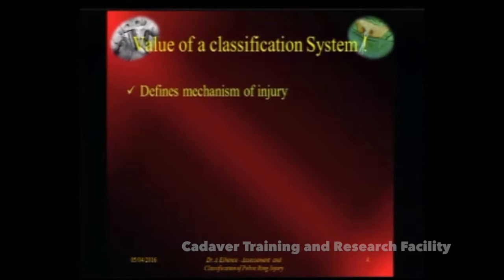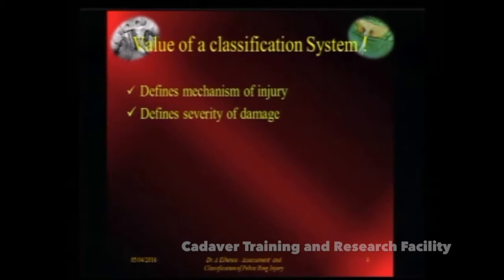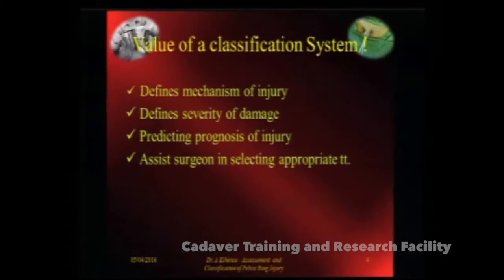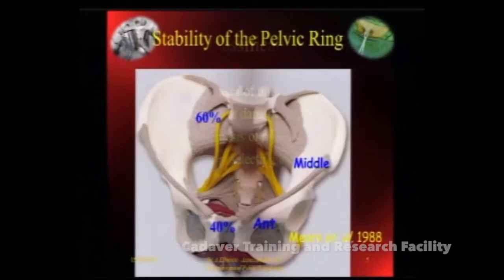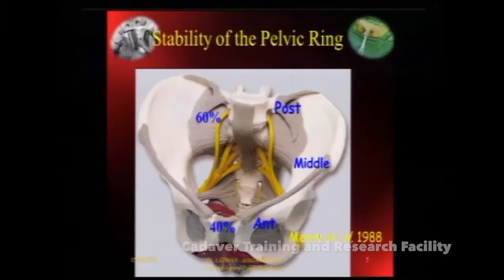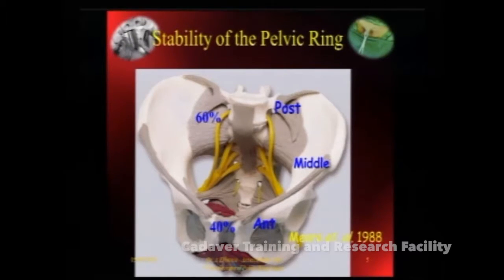So why do you want to classify? You want to define and know the mechanism of injury, because if I do not know the mechanism of injury, I will not know the extent of damage and I will not be able to plan my intervention. It defines the severity of damage and helps in predicting the prognosis of injury and assists a surgeon in selecting the appropriate treatment. But the problem with pelvic classification systems is that none does everything at the same time, and that is the reason why there are so many systems with no consensus.